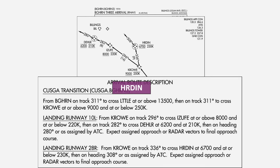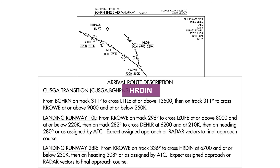It's Harden. When Billings is landing west, it means the west-facing runways are in use — runway 28 Right for us. The procedure shows in the textual description that for runway 28 Right, we proceed from Crow to Harden, and then on a heading of 308 until instructed otherwise by ATC. Harden, then, is the final point to cross on the arrival.